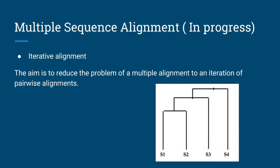Iterative alignment just starts by aligning the first sentence with the second, then aligns that result to the third sentence, then to the fourth, and so on. In this case, we don't need clustering as a first step. Progressive alignment produces more accurate results than iterative alignment, but iterative alignment is faster because it doesn't require clustering before starting.